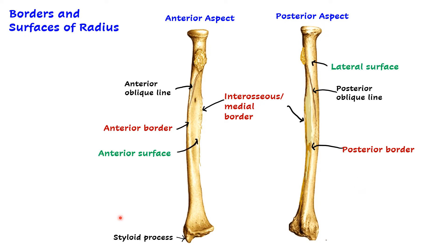The three surfaces are: the anterior surface, between the anterior and the interosseous border; the lateral surface, between the posterior border and the anterior border on the lateral aspect — since the radius is a lateral bone it will have a lateral surface and a medial border; and the posterior surface, between the interosseous border and the posterior border. So the three borders are anterior, posterior, and medial, and the three surfaces are anterior, posterior, and lateral.